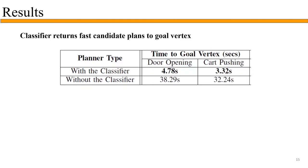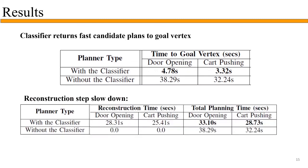Using the classifier, we obtain fast candidate plans through the goal vertex, achieving an 8 to 9 times speedup compared to not using the classifier. Because a classifier can make mistakes, we reconstruct the entire trajectory of the candidate plan to ensure feasibility and find new candidate plans if necessary.